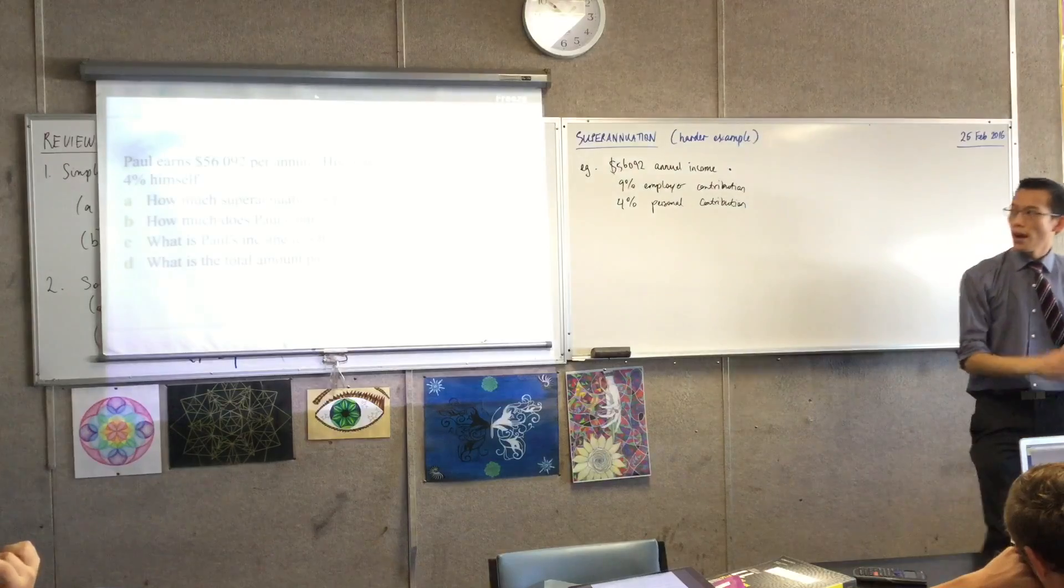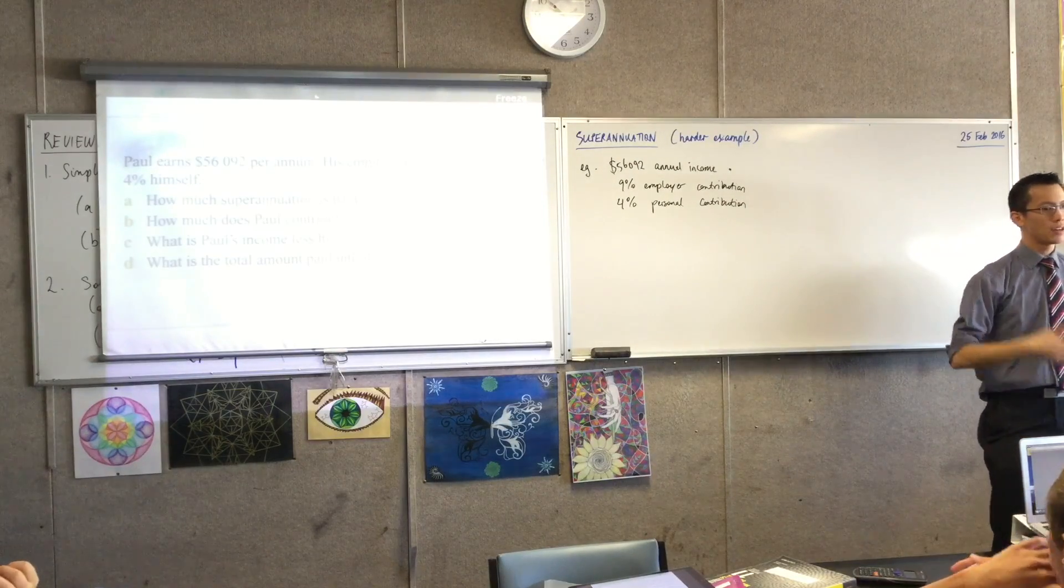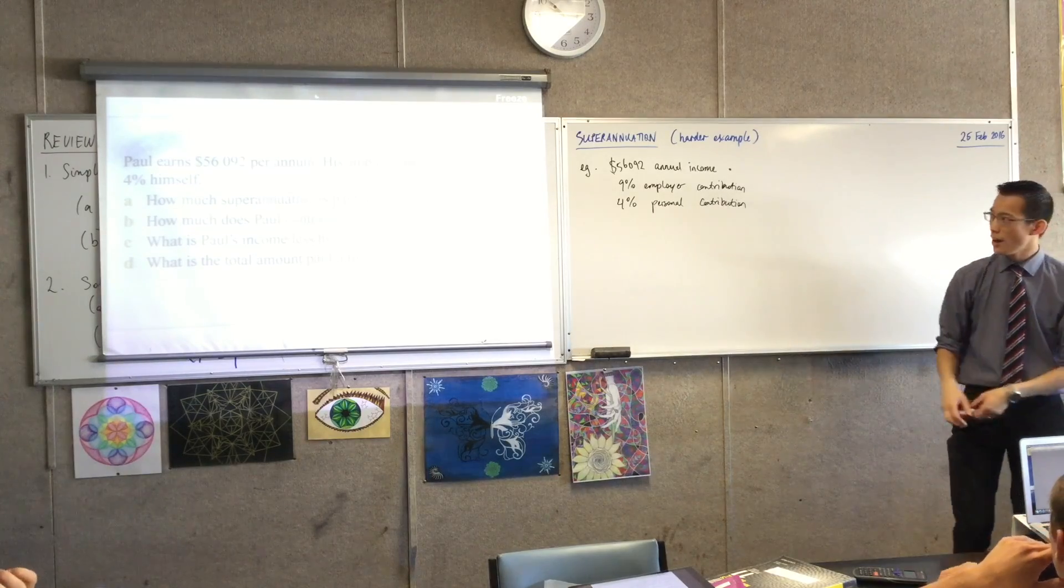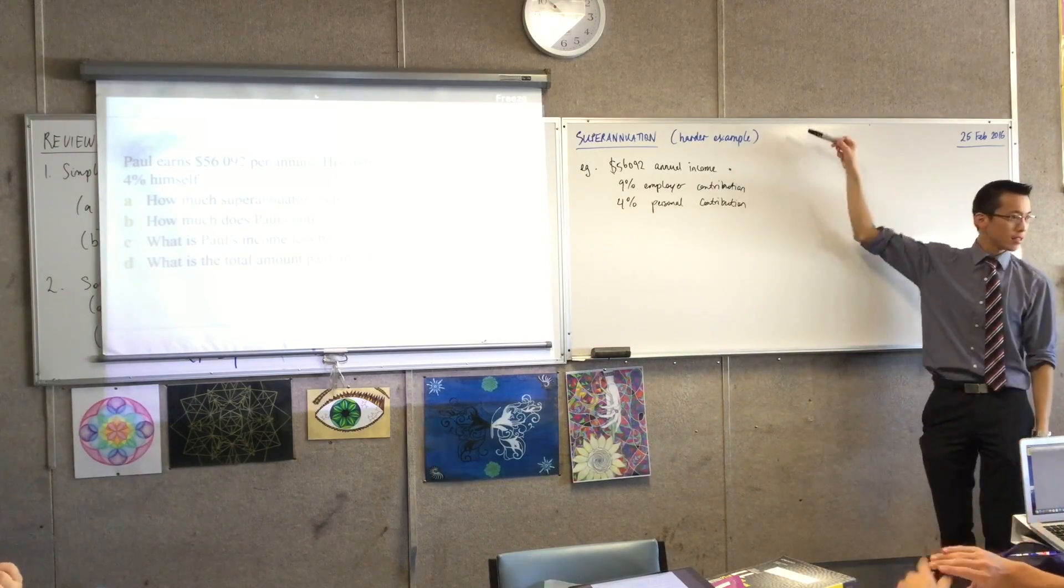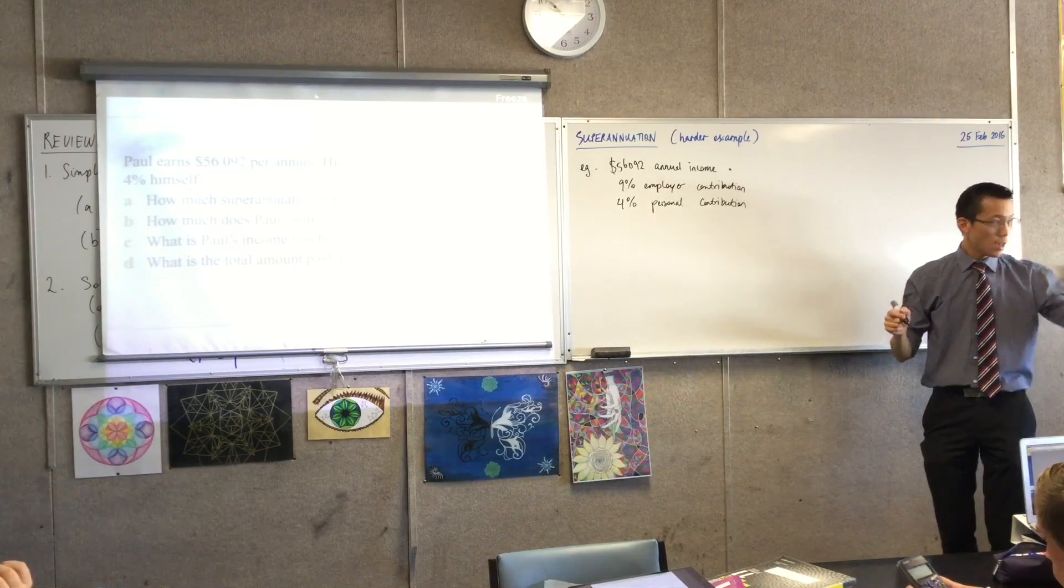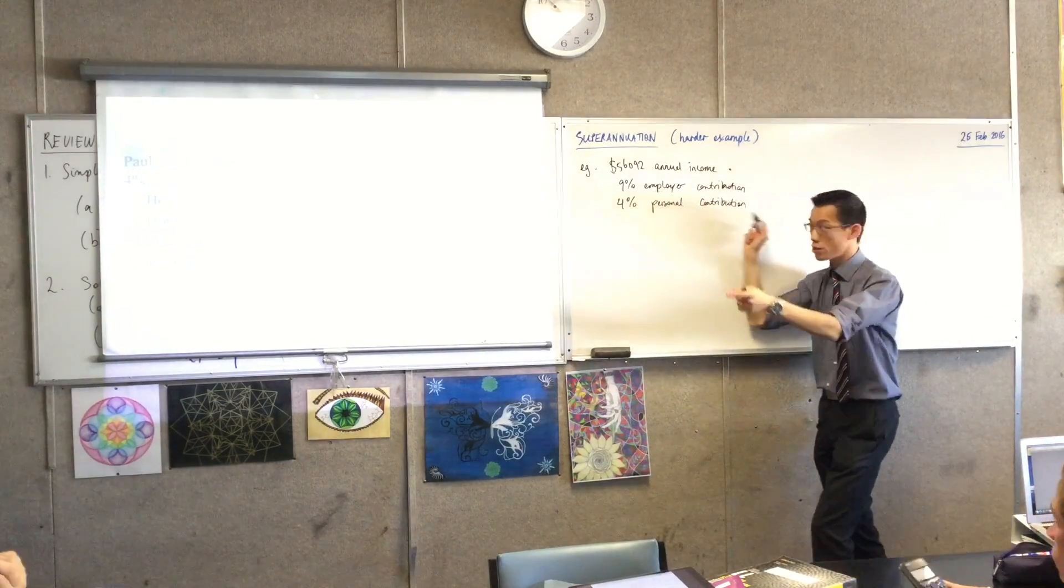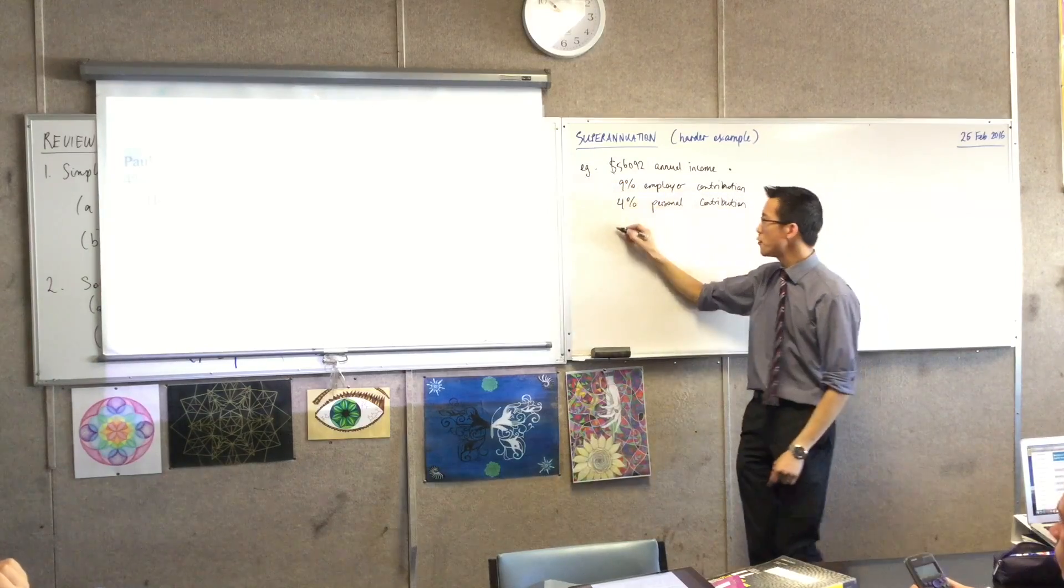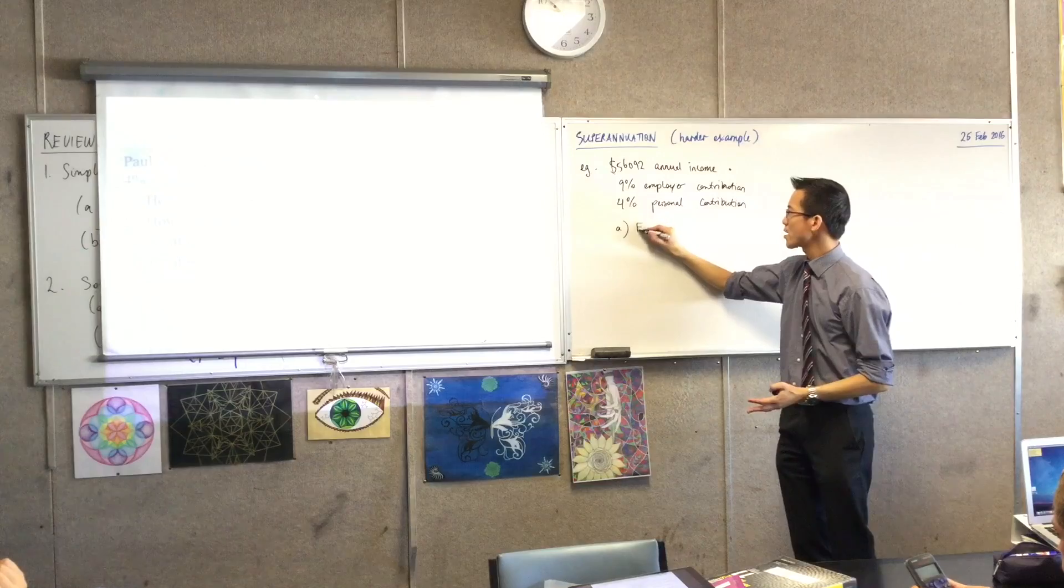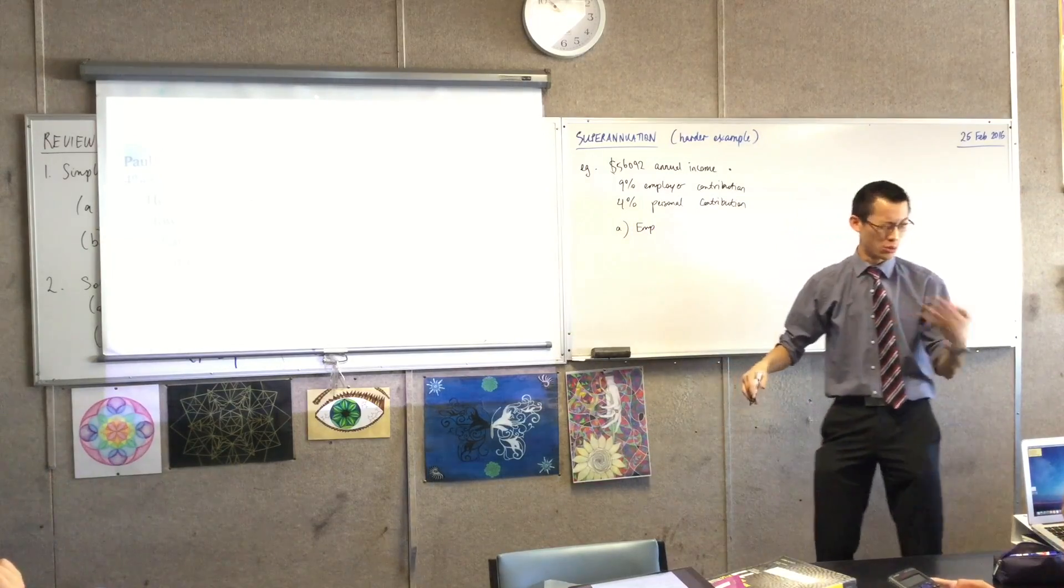That's all the information that the question requires. So we're going to take that and try to answer these parts. So Part A: How much superannuation is paid on Paul's behalf? Now, look at that wording carefully. On Paul's behalf, which of these does Part A refer to? The employer contribution. Yeah, it's the employer contribution. It's the 9%.